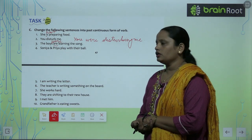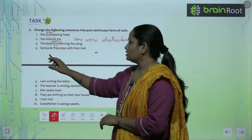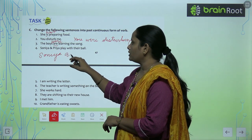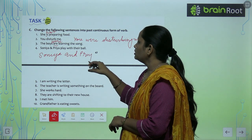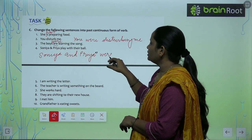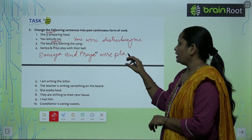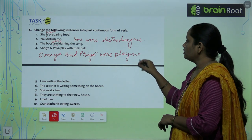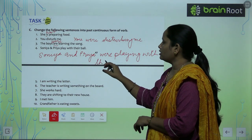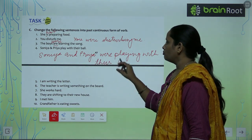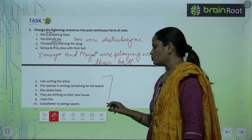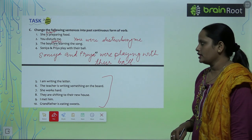'Sonia and Priya play with their ball' — since there are two subjects, we use 'were': 'Sonia and Priya were playing with their ball.' Clear, children! Like this, try to do the remaining questions.